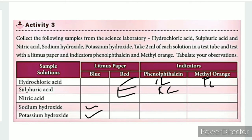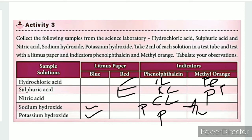Hydrochloric acid with phenolphthalein is colorless. With methyl orange it shows pink color. The two bases — sodium hydroxide and potassium hydroxide — with phenolphthalein show pink color, and with methyl orange show yellow color.